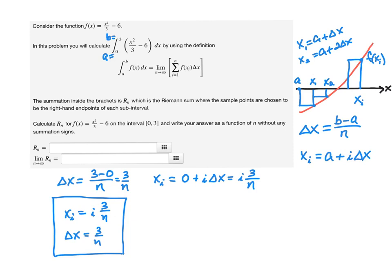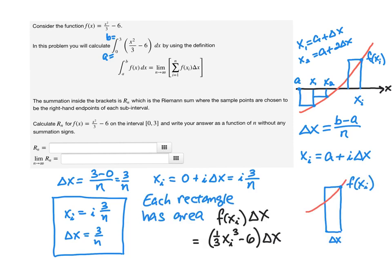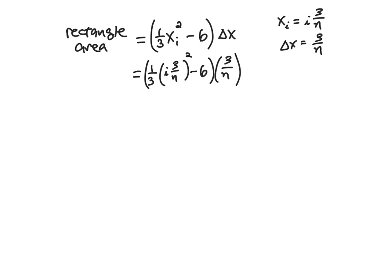Now let's plug xᵢ into the function and multiply by Δx to get the area of each rectangle. Each rectangle has area f(xᵢ)·Δx, where the height is the point on the curve. Plugging xᵢ into f gives us xᵢ squared, and then we multiply by Δx. So the rectangle area is (⅓·xᵢ² − 6)·Δx.